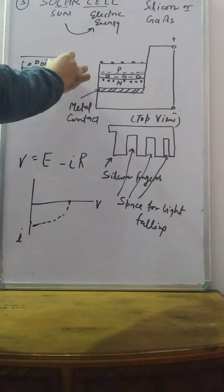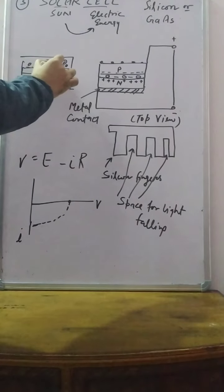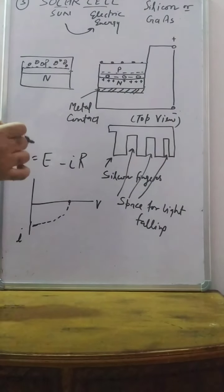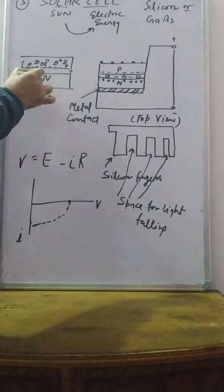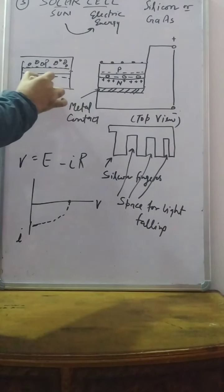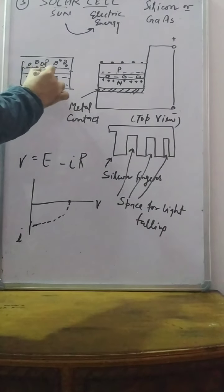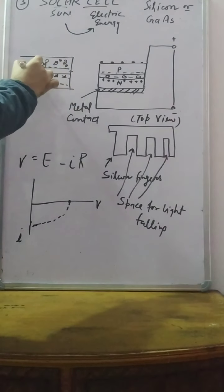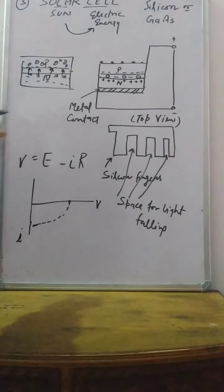Electrons are not present on one side, so here it is negative — this is the tendency of negative. Similarly, on the other side electrons are present, so this tendency is positive. Here it is positive. So an electric field is generated in this depletion layer.